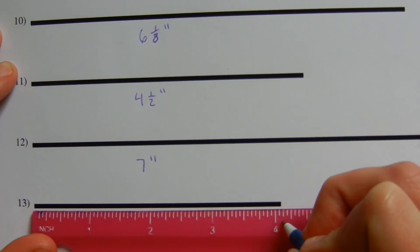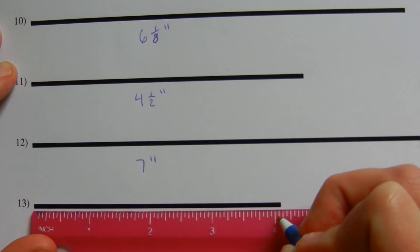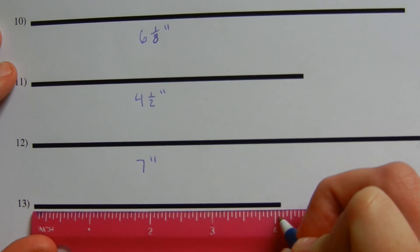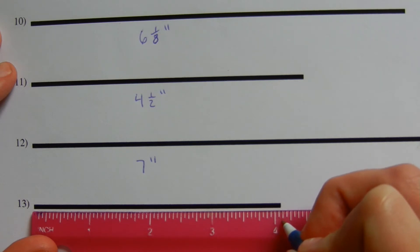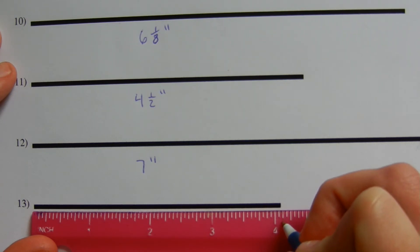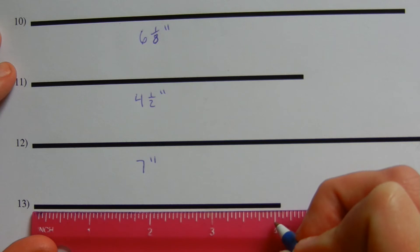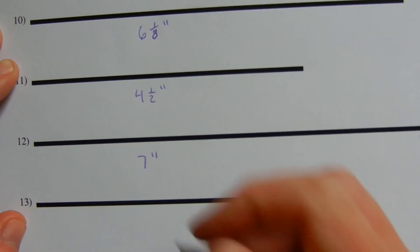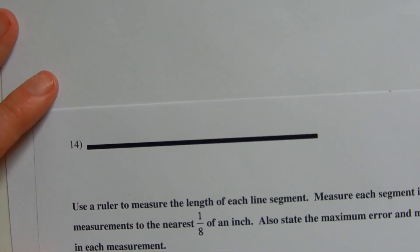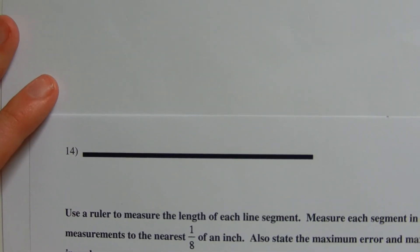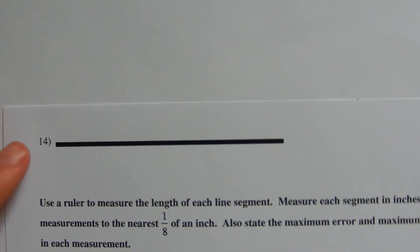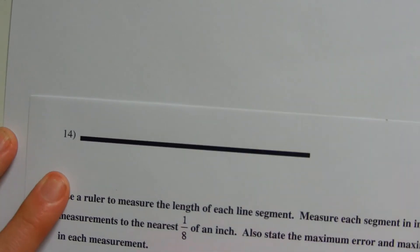Number thirteen: lining our ruler up, we go right past four inches and approximately one eighth past four inches. Remember, I'm not counting the smallest tick marks because this ruler is broken up into sixteenths of an inch — I'm counting the second smallest tick marks, which are my eighths. So I get four and one eighth of an inch.